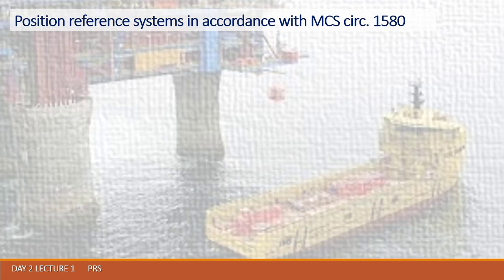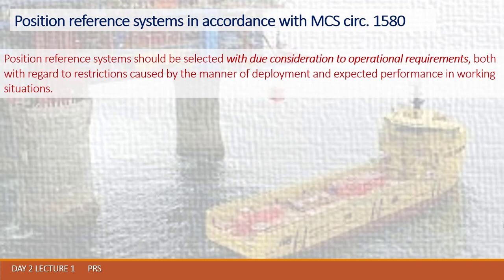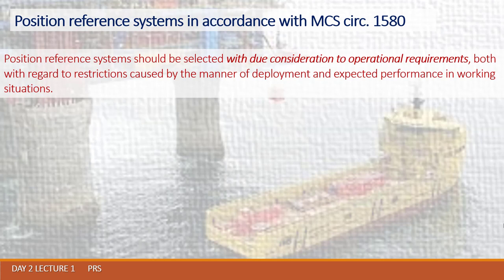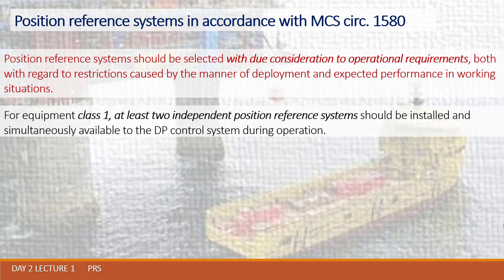From that document, we have the following statements: Position reference systems should be selected with due consideration to operational requirements, both with regard to restrictions caused by the mooring deployment and expected performance in working situations. For equipment class one, at least two independent position reference systems should be installed and simultaneously available to the DP control system during operation.